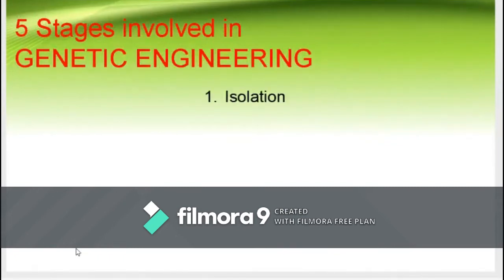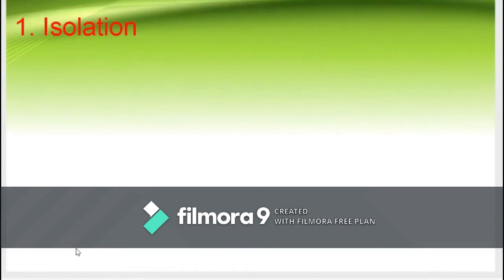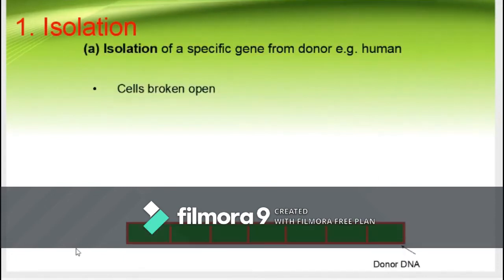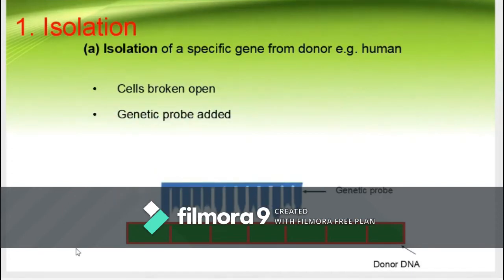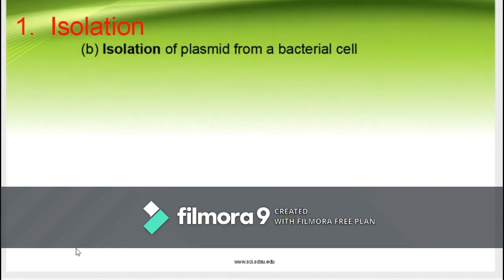There are five stages involved in genetic engineering: isolation, cutting, ligation and insertion, transformation, and expression of the gene. In the first step — isolation — the gene of interest is transcribed on the genetic probe to reveal its position. In the isolation of a plasmid, a plasmid is a small, often circular DNA molecule found in bacteria and other cells. Plasmids are separate from the bacterial chromosome and replicate independently. They generally carry only a small number of genes, notably some associated with antibiotic resistance.